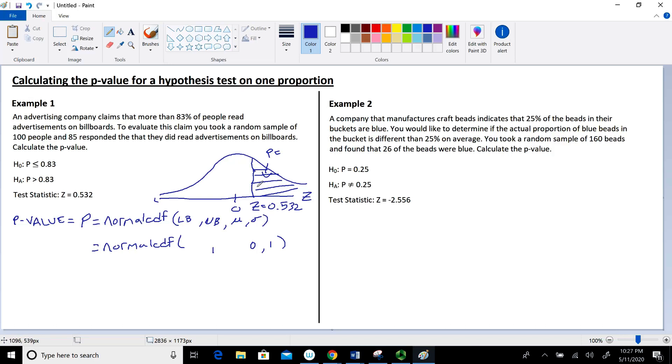Looking at this picture, we want the area from this z value to the right. This is our lower bound at 0.532. Our upper bound, since this curve goes to infinity without crossing the horizontal axis, would be positive infinity. I use the value 1 million for the upper bound in this case.